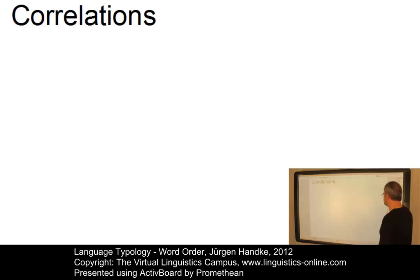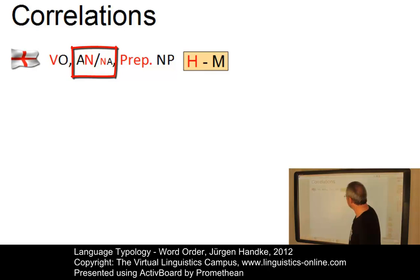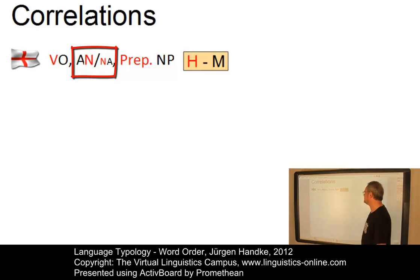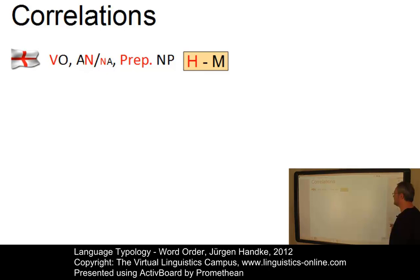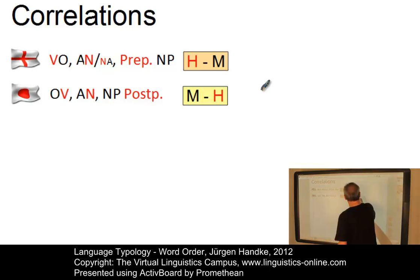Let's look at the languages we are interested in. English is clearly a head-modifier language: the verb precedes its object and English has prepositions. The adjectival parameter is a little problematic — we have modifier-head constructions like 'the big book,' but also adjectival constructions where the adjective follows the noun as in 'the president-elect.' But the majority of ordering patterns is head-modifier. Japanese, on the other hand, has modifier-head patterns very clearly, so Japanese would be an SOV language, whereas English is almost exclusively SVO.